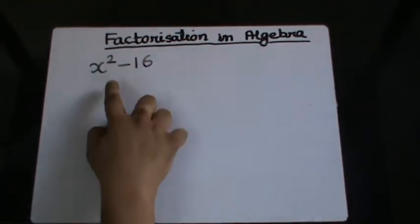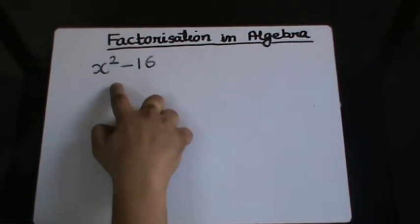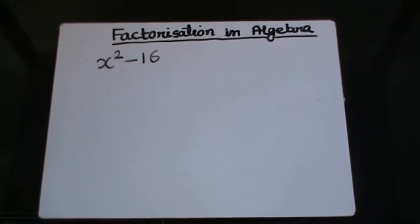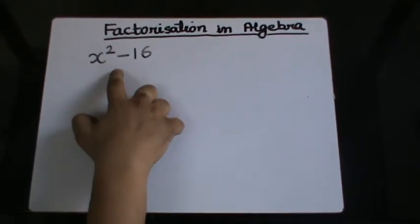It's easy to see that this is a type 3 factorization where I have to split the middle term. However, we find that there is no middle term given here.